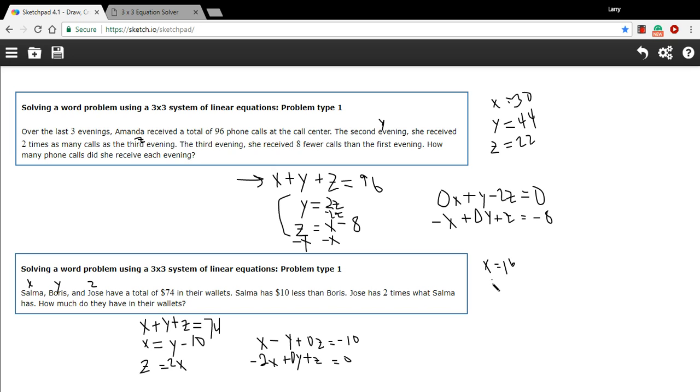So Salma should have 16. And Boris should have 26. And Jose should have 32. So that's a little bit of work with solving some word problems using a three-by-three system of linear equations.